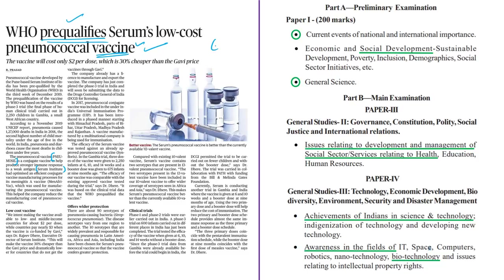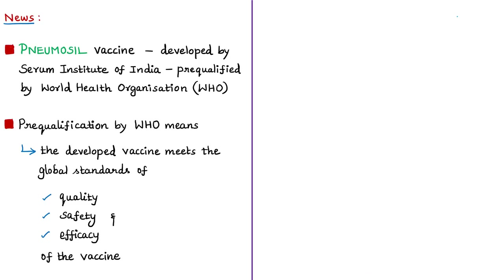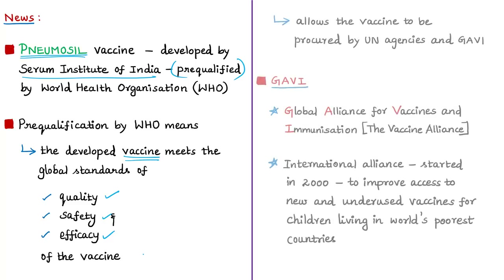The Pneumosil vaccine developed by the Serum Institute of India has been pre-qualified by the WHO, meaning the WHO has certified that it meets global standards for vaccination against pneumonia in terms of quality, safety, and efficacy. The speciality of WHO pre-qualification is that it allows Pneumosil to be procured by United Nations agencies and by GAVI — the Global Alliance for Vaccines and Immunization.